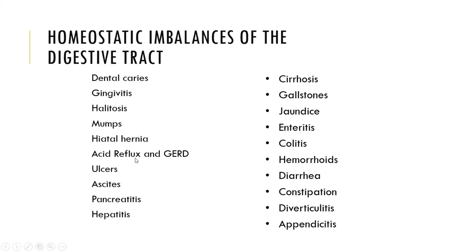Acid reflux, also known as GERD, is the failure of one of our sphincter muscles to prevent the backflow of stomach acid into the esophagus. We have a built-in sphincter muscle to prevent that backflow, but when it's not functioning properly, we have heartburn, also known as acid reflux.